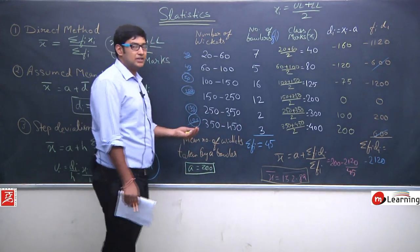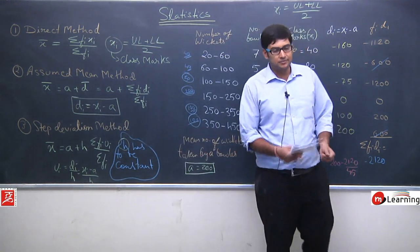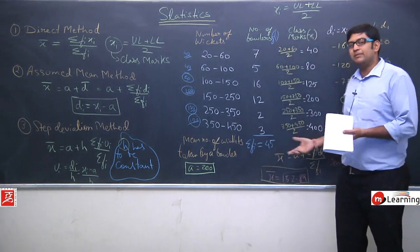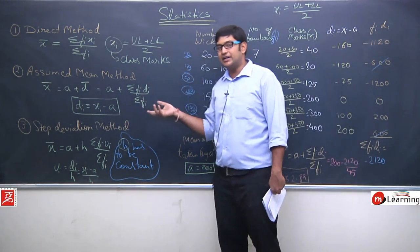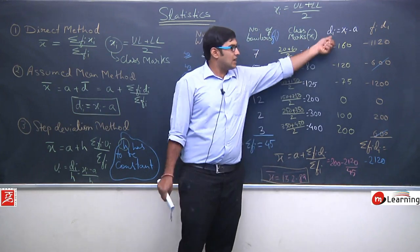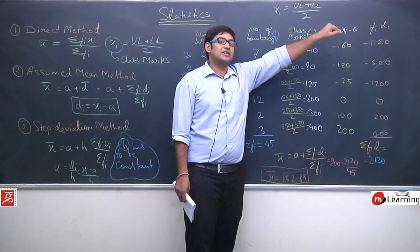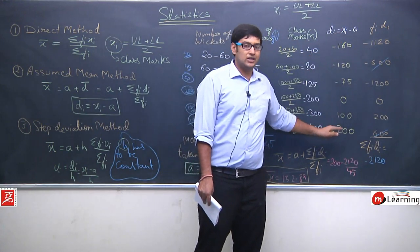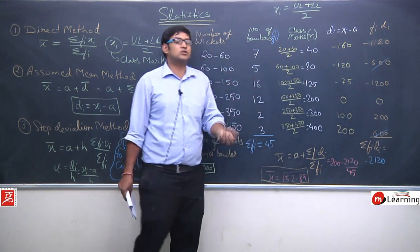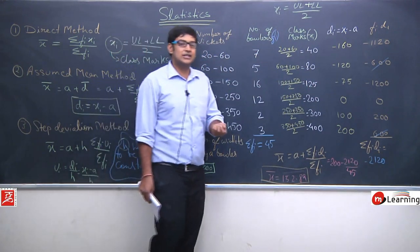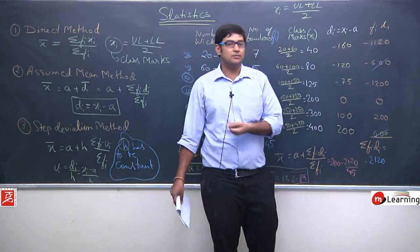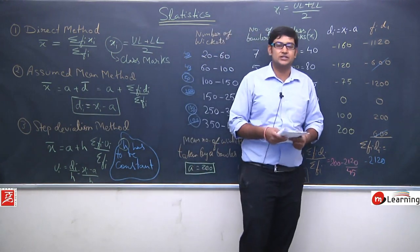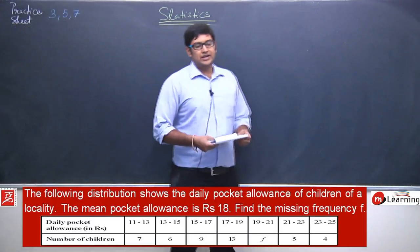This is an example where the class interval is not constant. When confused, it is better to use the direct method or assumed mean method and solve. Ultimately the time taken is the same. If the deviations don't divide evenly into whole numbers, it is better to directly multiply and calculate rather than try to apply step deviation.